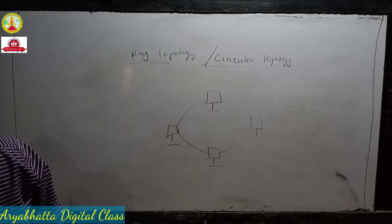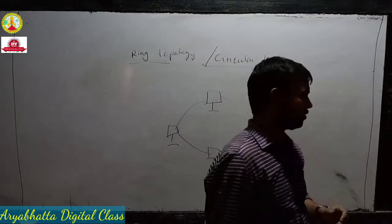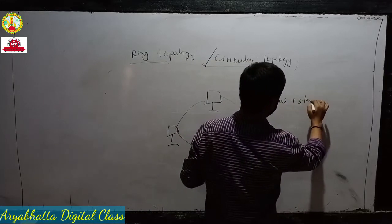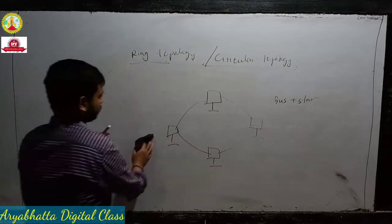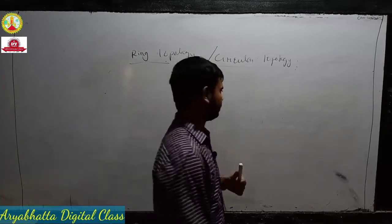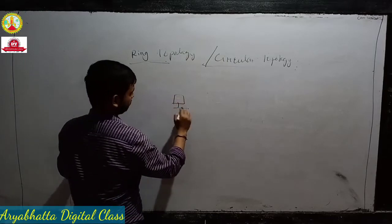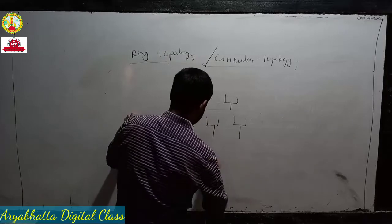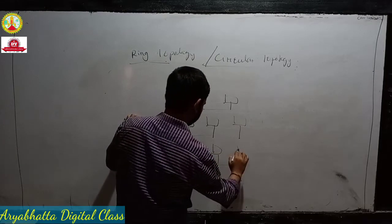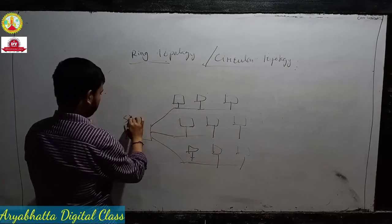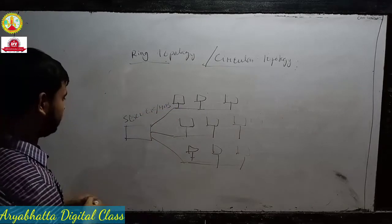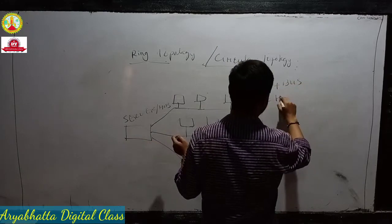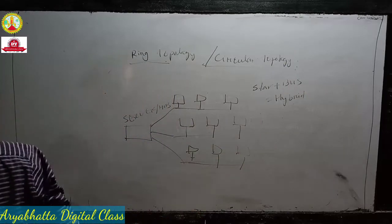Next is hybrid topology. Hybrid means consisting of two topologies — for example, bus and star. Suppose there are hosts connected in a bus arrangement, and all three are also connected with a server or hub. That consists of star and bus topology combined. This is called hybrid topology. So topology is done. Mainly you should read the advantages and disadvantages.